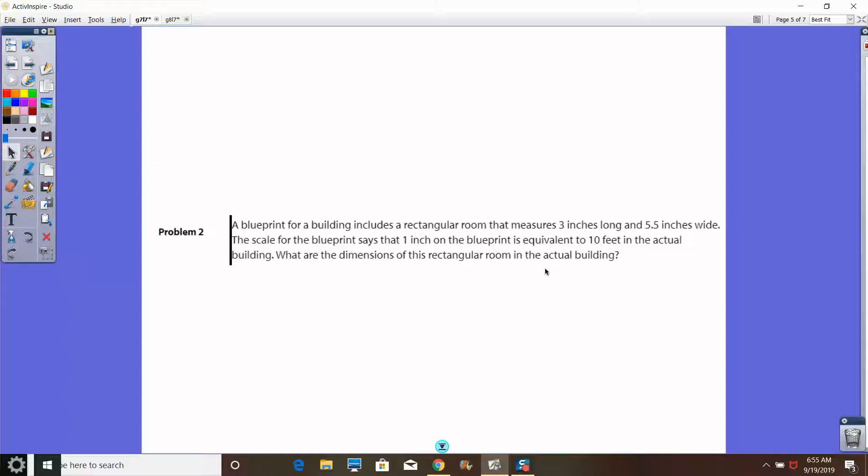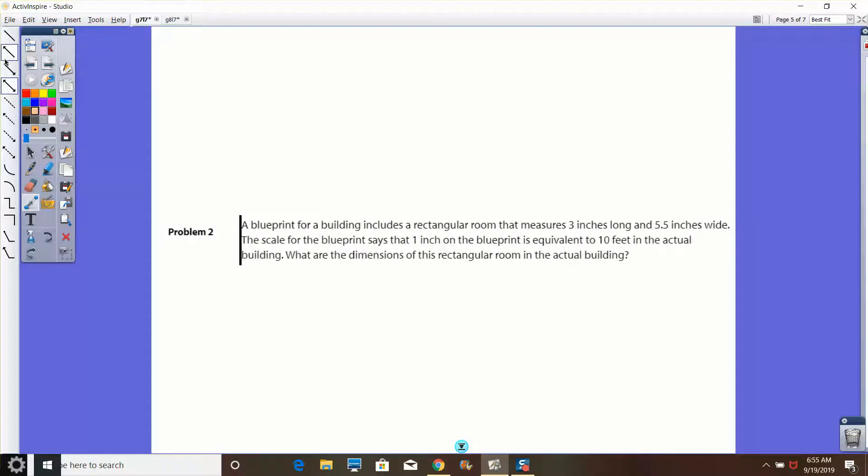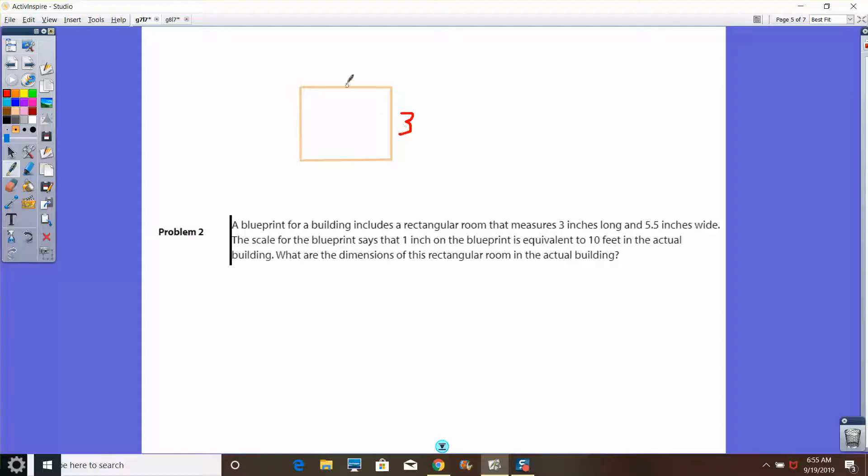For problem two, you have a statement here. A blueprint for a building includes a rectangular room that measures three inches long by five and a half inches wide. The scale for the blueprint says one inch is equivalent to 10 feet in the actual building. What are the dimensions of the rectangular room in the actual building? So you are trying to figure out a rectangle, and your job is to say what is the actual distance. If this was to scale, this would be three inches long and five and a half inches wide. The scale in the problem is telling you that one inch is equal to 10 feet in actual distance. You should be able to figure that out from here.